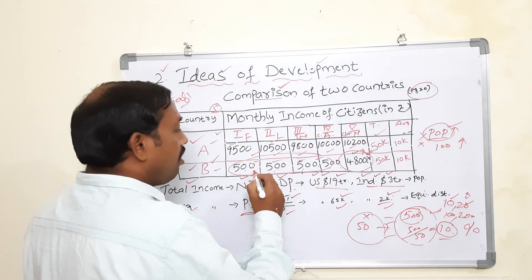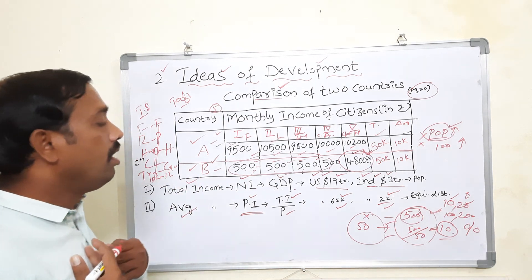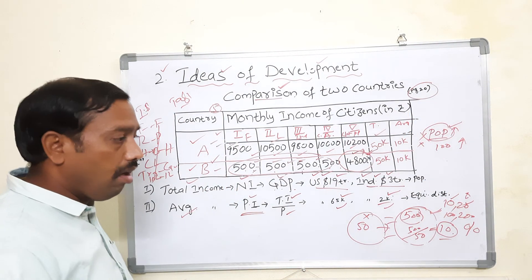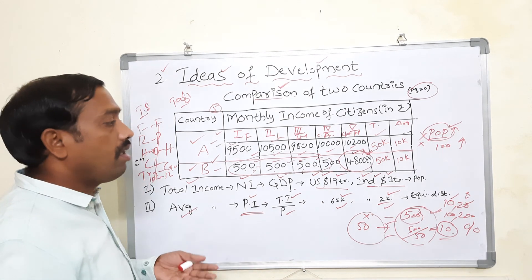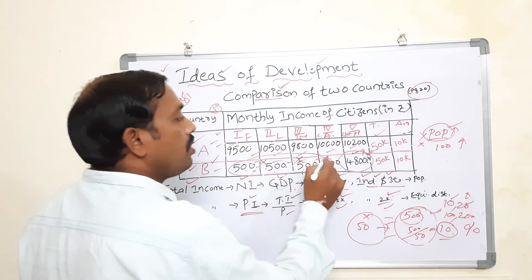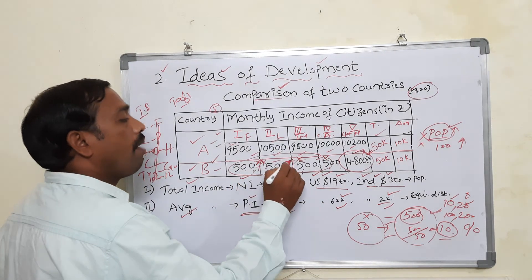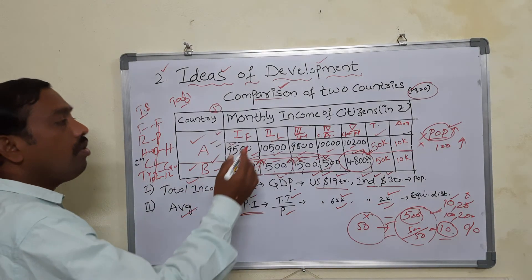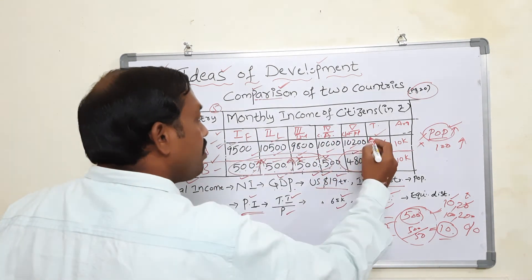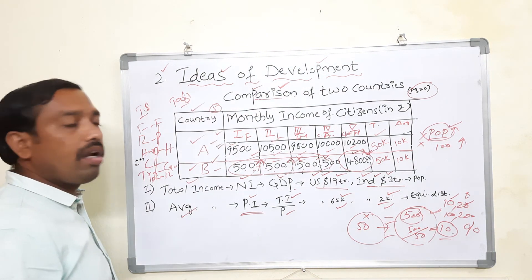That is the reason we use per capita income to understand which country is developed. Just as all body parts should grow equally for a healthy body, all people should get at least a minimum income — the gap between rich and poor should be reduced. Governments take many steps like social security schemes to uplift poor families. So for your answer, the heading is 'Comparison of Two Countries' and you can explain that equitable distribution of income is very important. Write your answer this way and you can get good marks. Thank you — like, share, and subscribe.